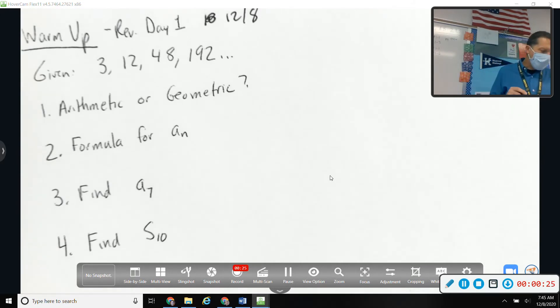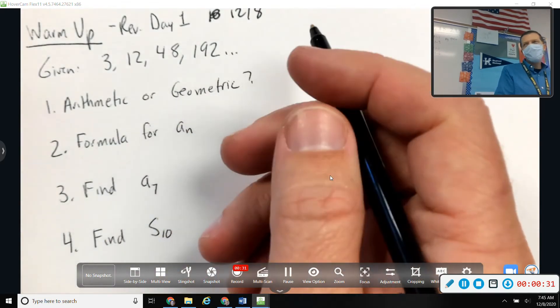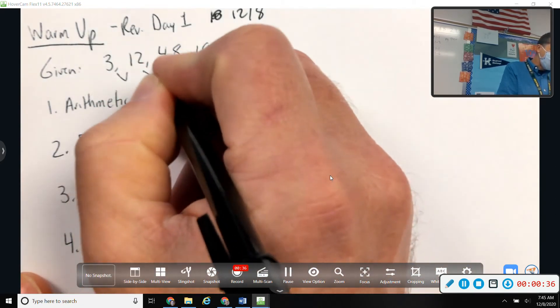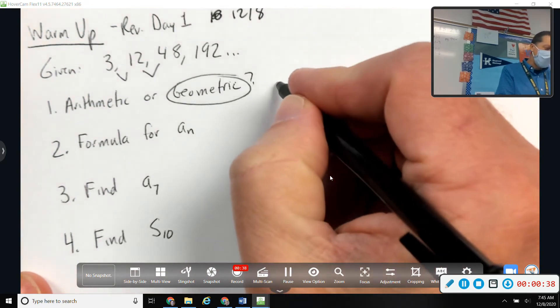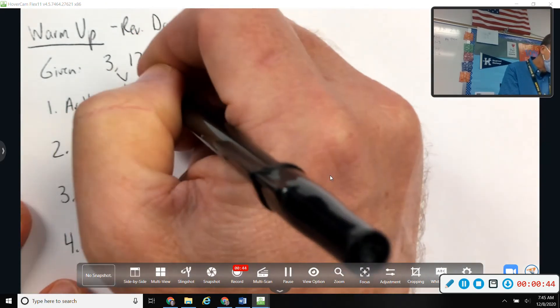Alright, let's go over these. So arithmetic or geometric? Geometric, because we are multiplying. What are we multiplying by each time? Abby? Four. Yes, it's geometric because it has a common ratio of four.